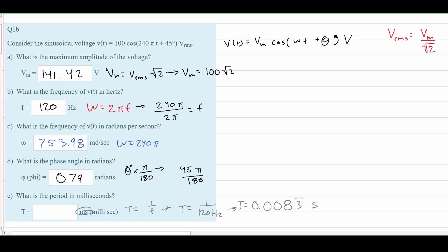We want the answer in milliseconds, so we multiply by 1 milli over 10^(-3). Moving the decimal three places gives 8.33 milliseconds.